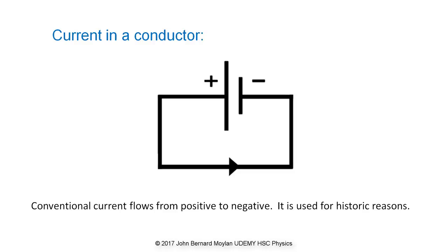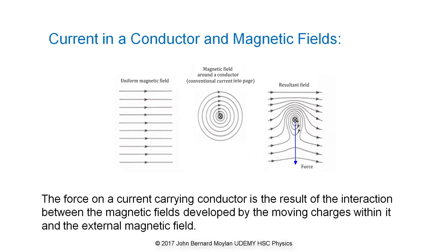Conventional current assumes that the electrical current is carried through a conductor in the form of positive charges. As you can see in the diagram, conventional current flows from positive to negative. Charged particles moving through a conductor experience a force due to an external magnetic field, and this force is transmitted to the conductor.